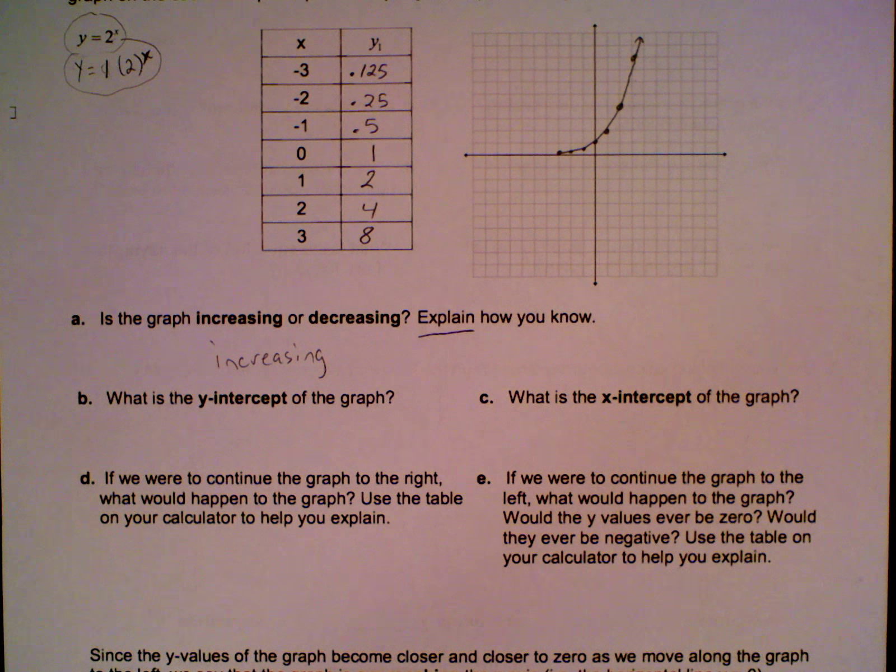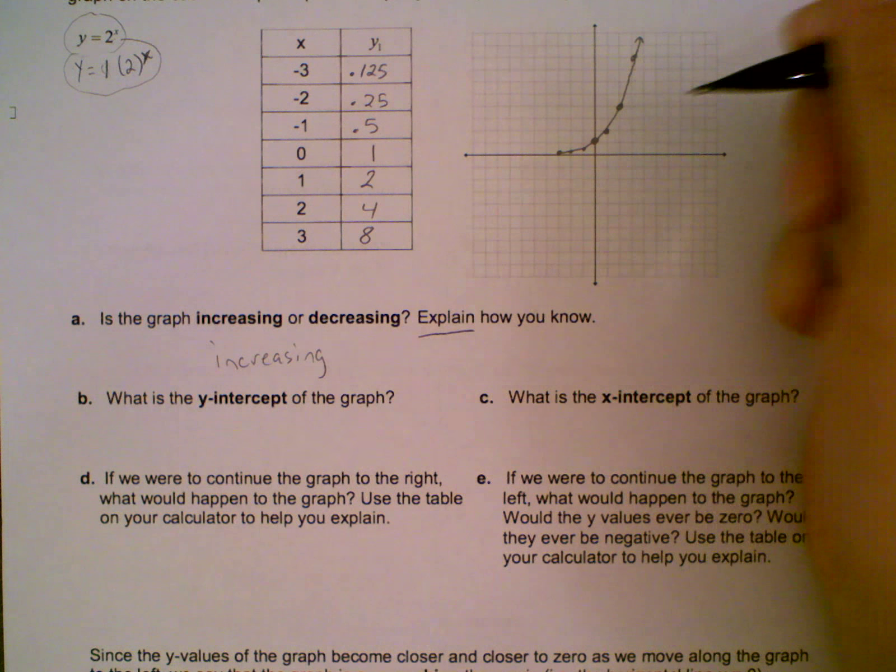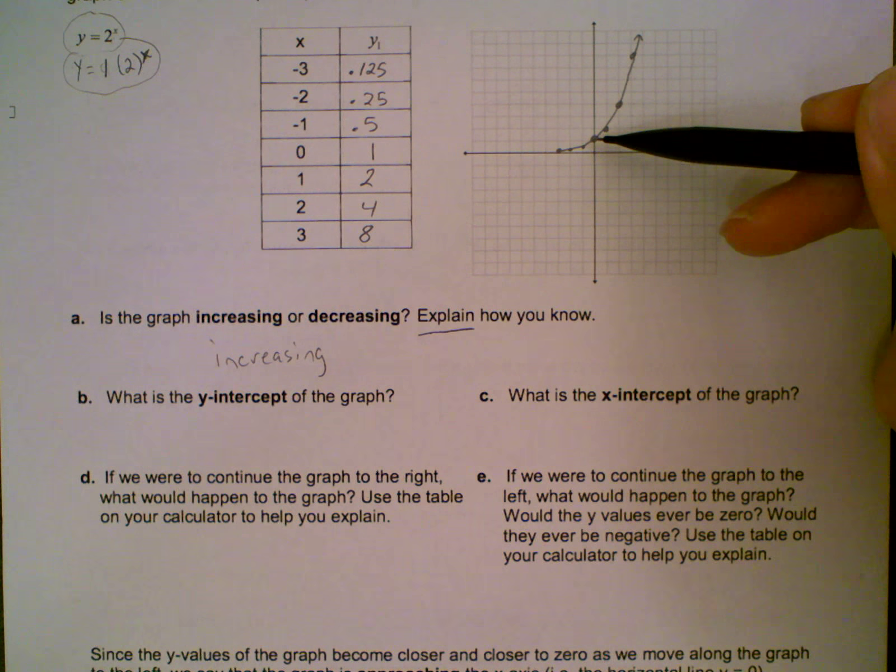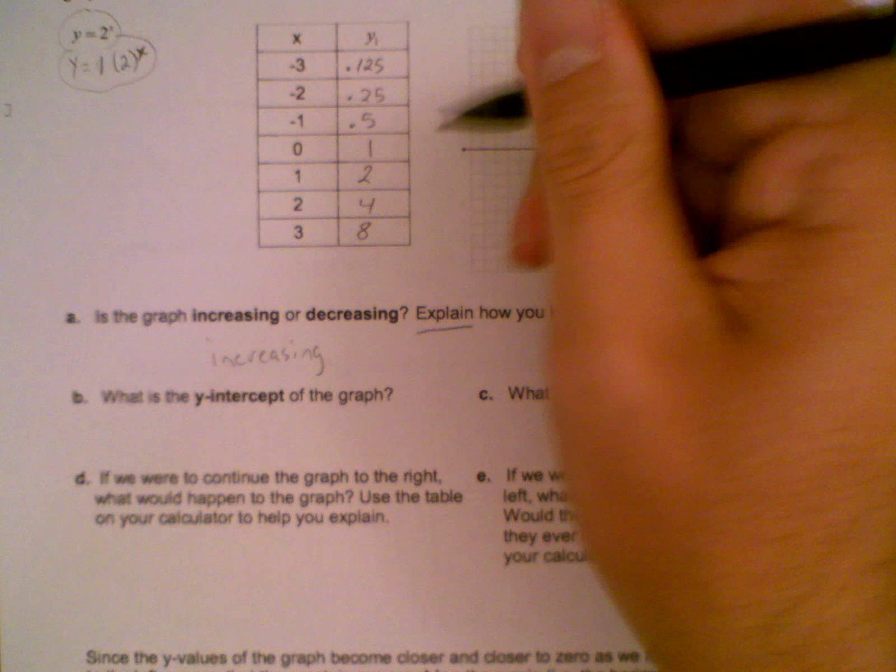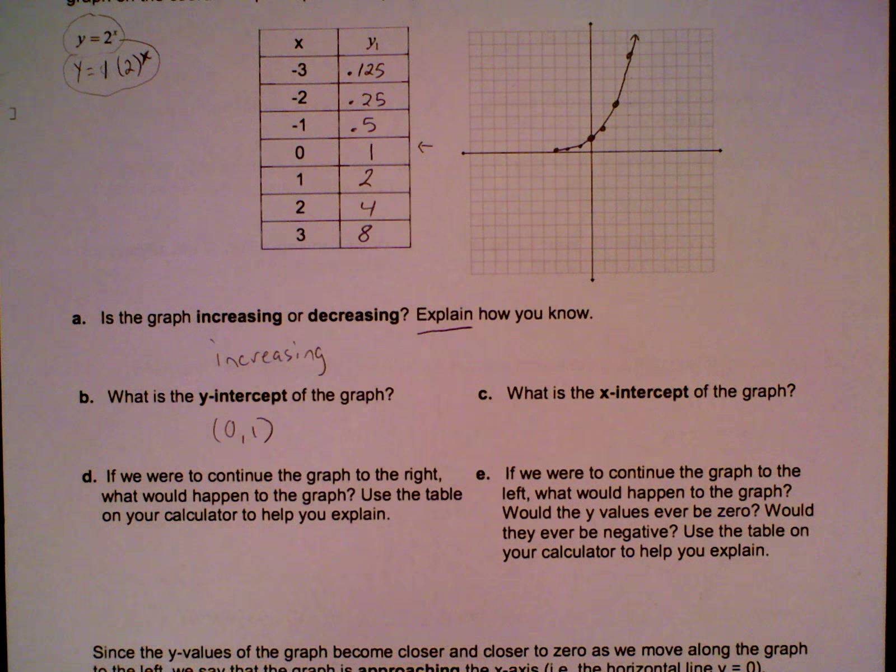Okay, what is the y-intercept of the graph? So my y-intercept is the point where it crosses the y-axis. We can see it from the graph, or we can see it from the table right there. So what is my y-intercept? It's going to be 0 comma 1. Don't forget the parentheses, don't forget the comma.